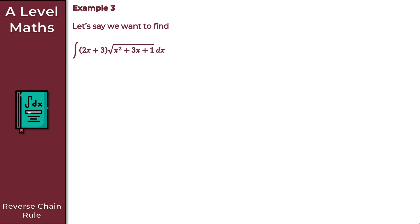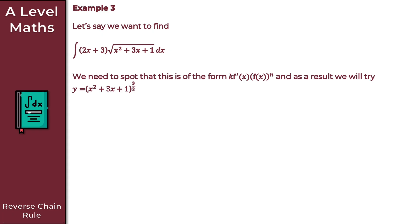Moving on to example 3, our penultimate example. We want to find this integral, which at first glance looks quite complicated. We spot that our integrand is of the form k times f prime of x times f of x to the n. As a result, we try y equals x squared plus 3x plus 1 all to the power of 3 over 2. We took x squared plus 3x plus 1 as f of x to the n, where n is a half because we're taking the square root. Adding 1 gives 3 over 2.